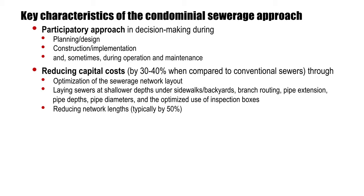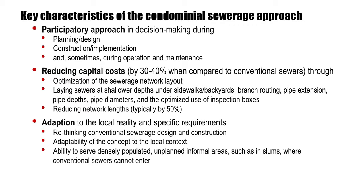An important factor of condominial sewers is the reduction in capital costs achievable compared to conventional sewers, through optimization of the network regarding branch routing, pipe extension, pipe depth, pipe diameter, and the optimized use of inspection boxes. One outcome of this optimization is that condominial sewerage networks can typically be 50% of the length of conventional ones.